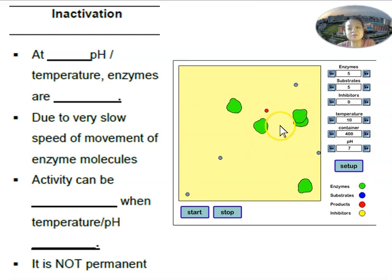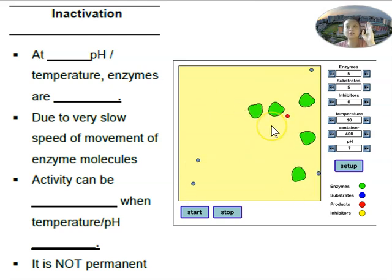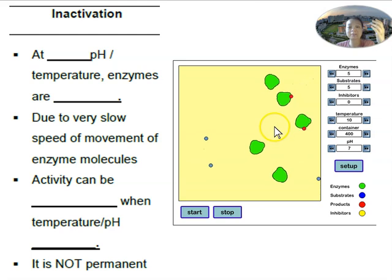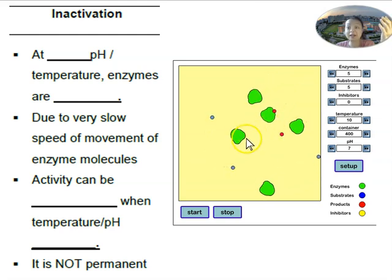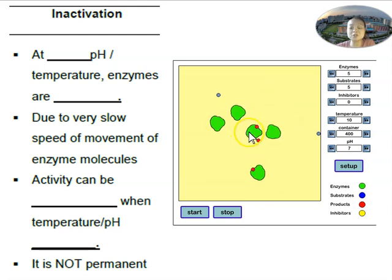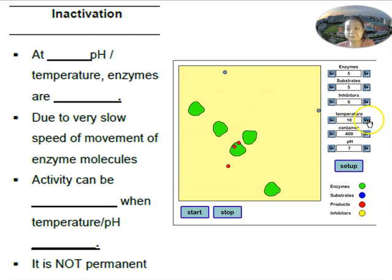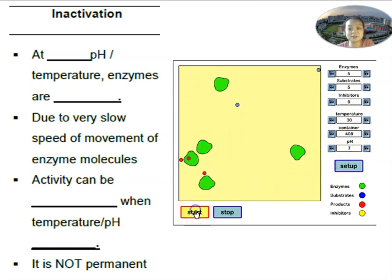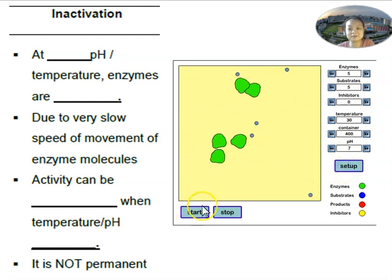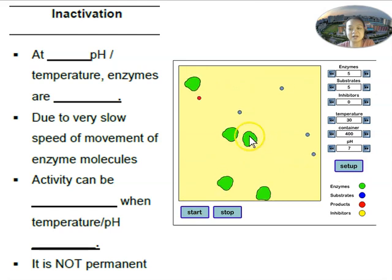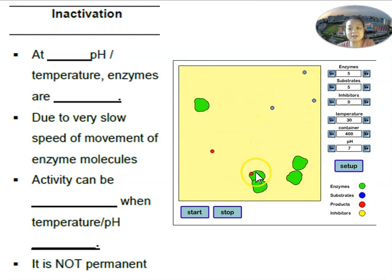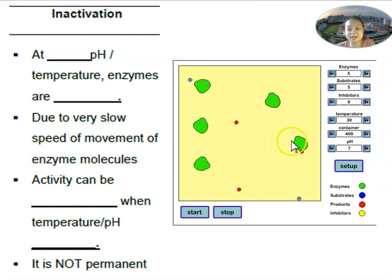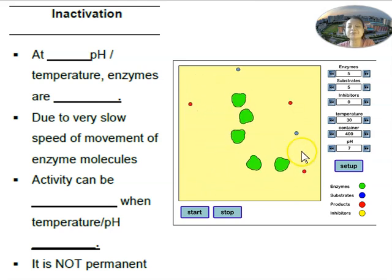This is very similar to what you learn in chemistry about solid, liquid, gas — when you heat particles, they vibrate faster and move more quickly. Now, when I increase the temperature to 30 degrees Celsius and start it, you notice that the enzymes are moving much faster. You notice that the red circles, which are the products, show more and more products being produced because the enzyme can bump or collide with the substrates more often.